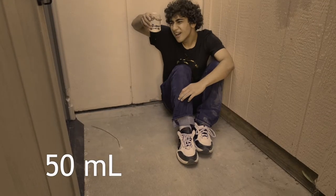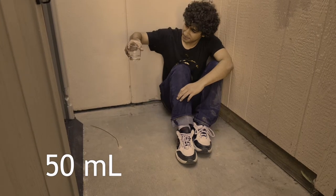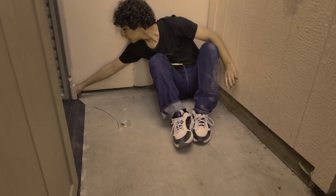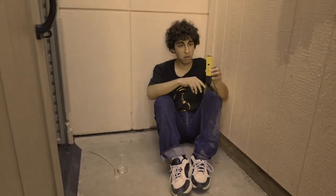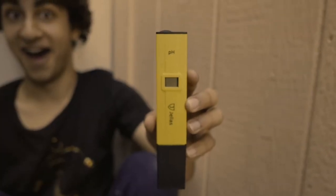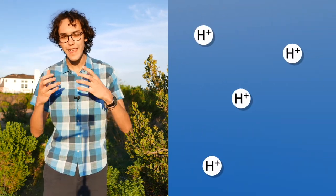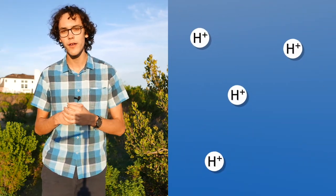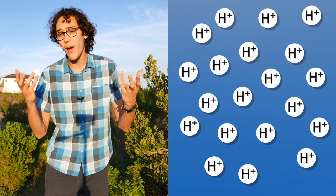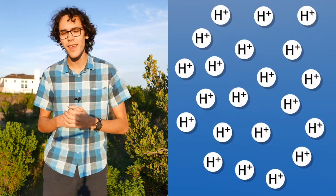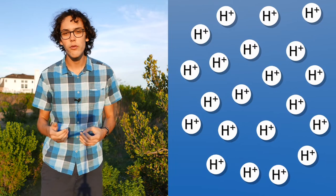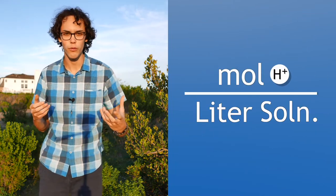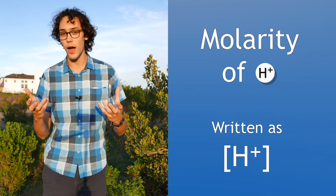First, you take note that you have 50 milliliters of this unknown acid. Then you rummage around your confines to see what you can find, and you come up with an electronic pH meter. You can think of pH as the power of hydrogen, or the concentration of hydrogen ions in the water-based solution you have. The more hydrogen ions you have, the more acidic it is. As a metric for this, you use the number of moles of hydrogen ions per liter of the whole solution, or the molarity of the hydrogen ions.